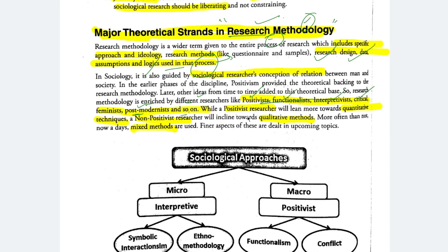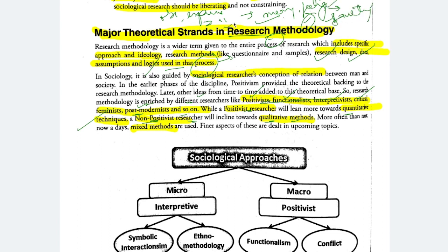One who is a positivist researcher will lean more towards quantitative technique. A non-positivist researcher will incline towards qualitative method. You already know who positivists are — those who are influenced by natural sciences. They say we should study sociology the same way natural science is studied, which means on the lines of natural science, using observation and experimentation. While positivist researchers lean towards quantitative methods, you analyze your numerical data and draw patterns from that — for example, statistical techniques.